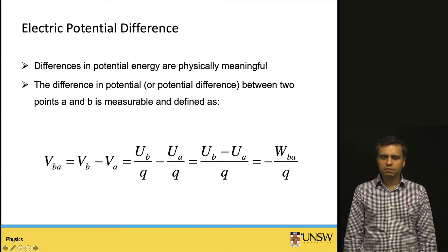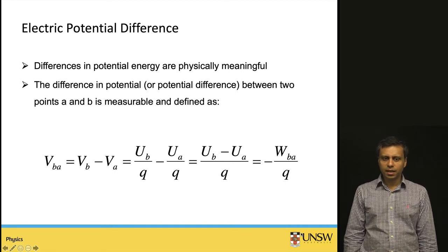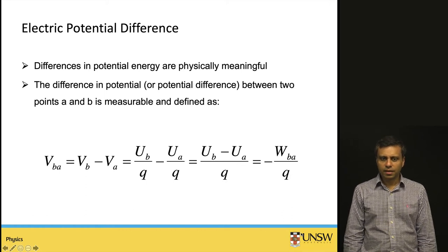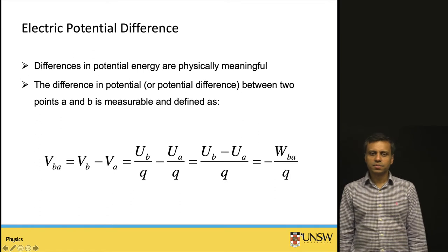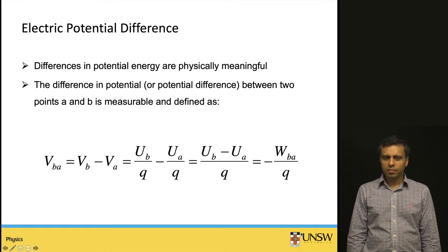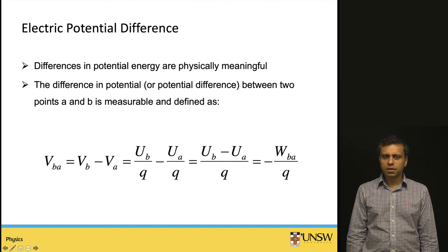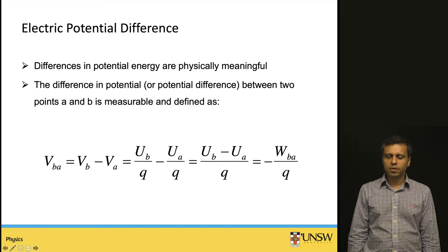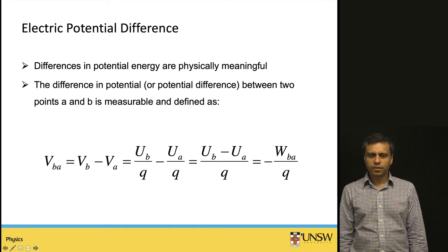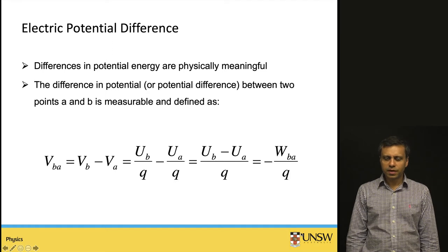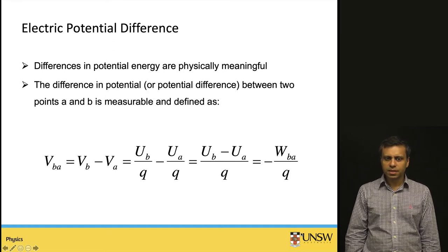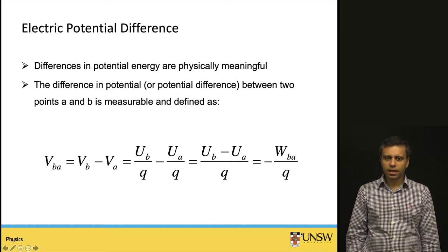The potential difference between two points B and A is defined as the potential at point B minus the potential at point A. In terms of potential energy, this is U_B divided by Q minus U_A divided by Q. This is also equal to the negative of the work done in moving the object from point B to A, divided by the charge Q.